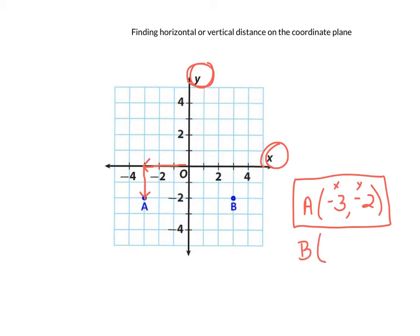If we wanted to label the ordered pair for B, this one, let's see if we look at where we are in relation to the x. We go over 3, so that one's actually a positive 3, and the y value also goes down 2. So that's just how we would express the B value and the A value if we were asked to. Okay, back to this topic.